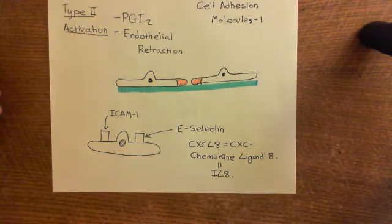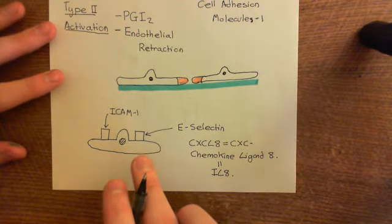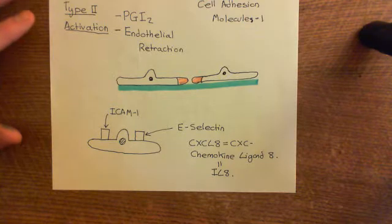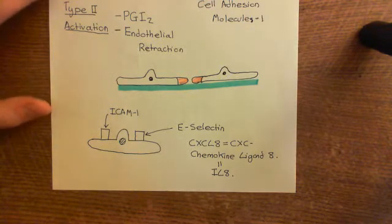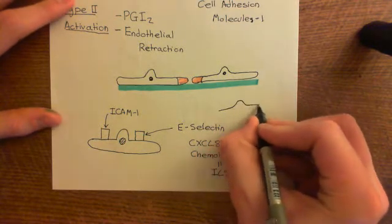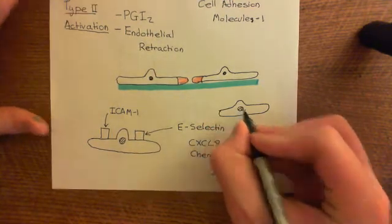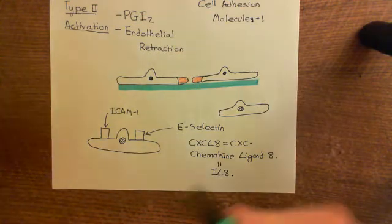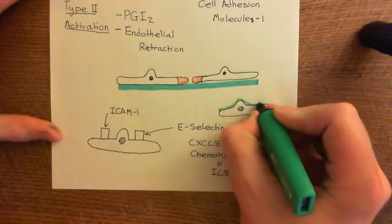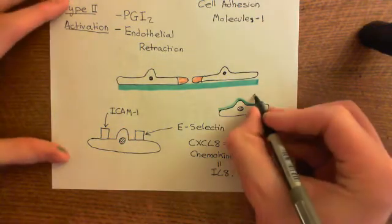CXCL8 is not an integral membrane protein. It is going to be stuck on the apical surface of the cell but not implanted into the phospholipid bilayer. Instead, it's going to be attached onto the glycocalyx. On the surface of all endothelial cells in your body, you have the glycocalyx — basically a whole bunch of polysaccharides attached onto the surface of the endothelial cell.